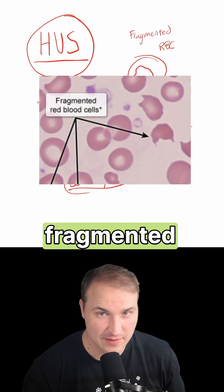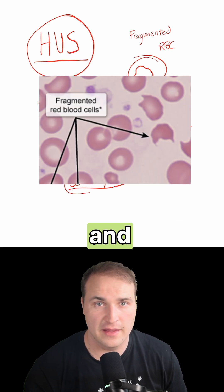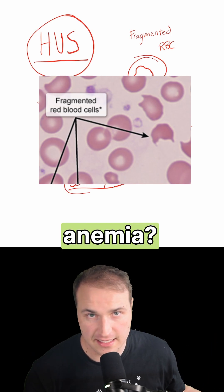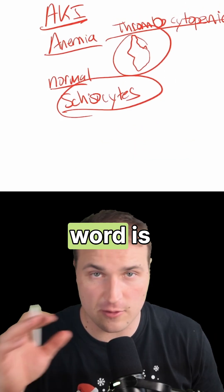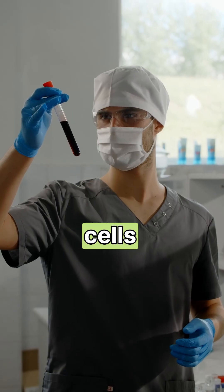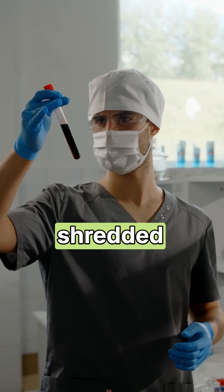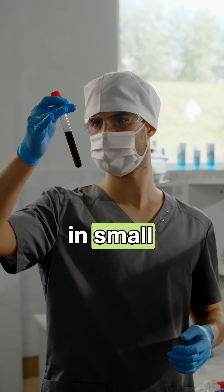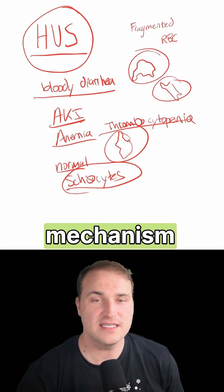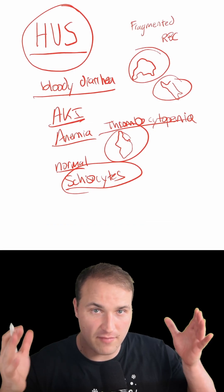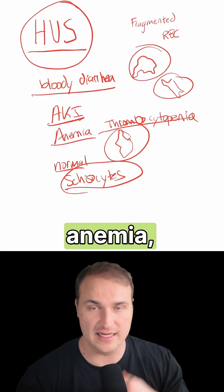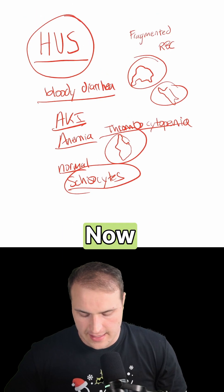Schistocytes are fragmented red blood cells. They're going to ask you what is causing the anemia, and the key word is the schistocytes. These are the red blood cells that are being physically shredded in small blood vessels. This mechanism is called microangiopathic hemolytic anemia, MAHA.